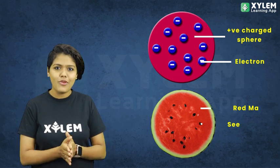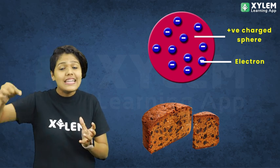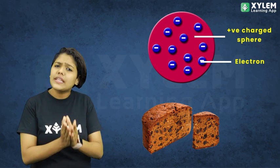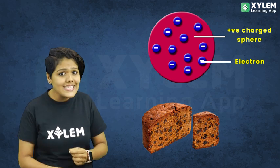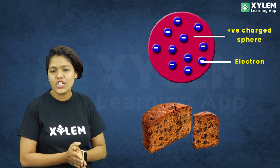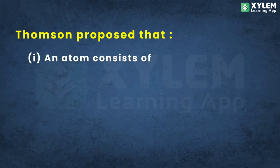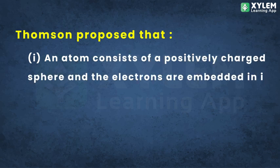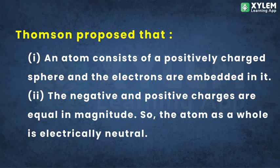Now let's see the plum pudding model. Here you can see a piece of plum cake. The plum cake resembles the positively charged sphere. Thomson proposed that an atom consists of a positively charged sphere and the electrons are embedded in it. The negatively and positively charged particles are equal in magnitude, so the atom as a whole is electrically neutral. This is all about J.J. Thomson's model of atom.